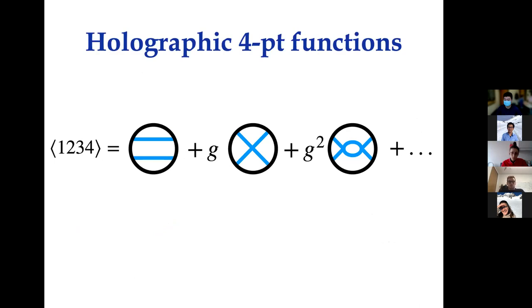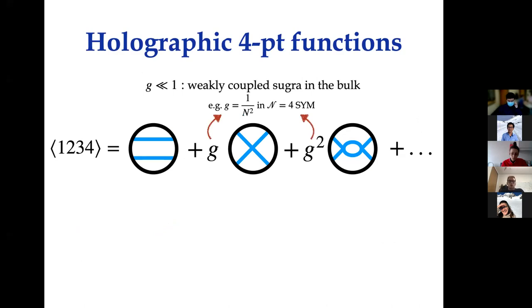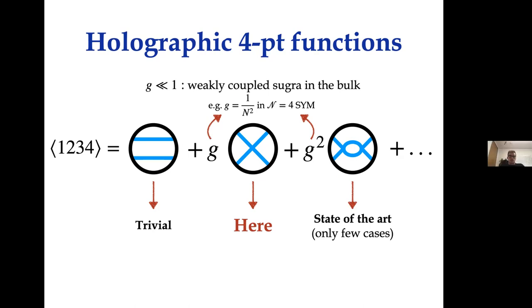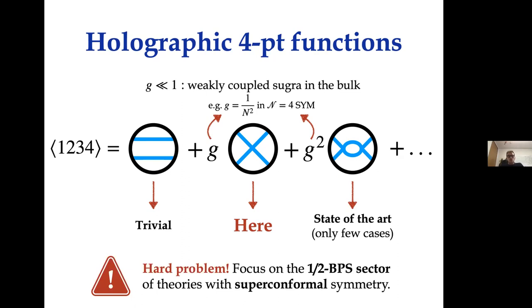We consider the case in which we have a small parameter g, and we're doing an expansion in this parameter. This g is generally present when we have a weakly coupled supergravity description in the bulk. For instance, in AdS_5 × S^5, which is N=4 super Yang-Mills, this g would be 1/N² where N is the number of D3 branes. The first term is a disconnected contribution which is trivial, while the second term represents tree-level interactions, which is the subject of this talk.